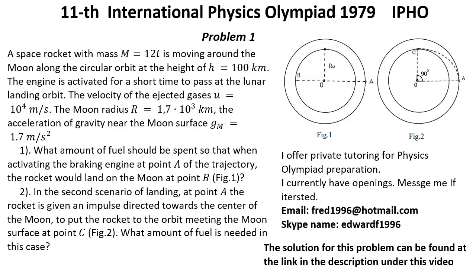Figure 1. Question 2. In the second scenario of landing, at point A the rocket is given an impulse directed toward the center of the moon, to put the rocket into the orbit meeting the moon surface at point C. Figure 2.